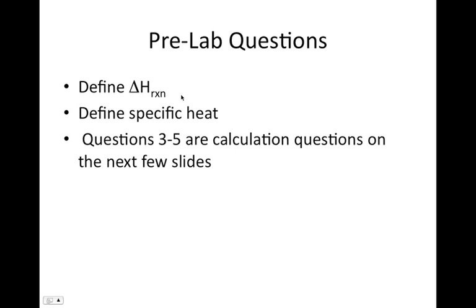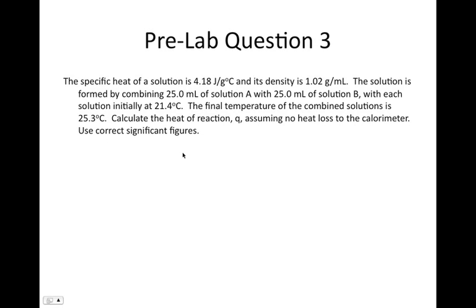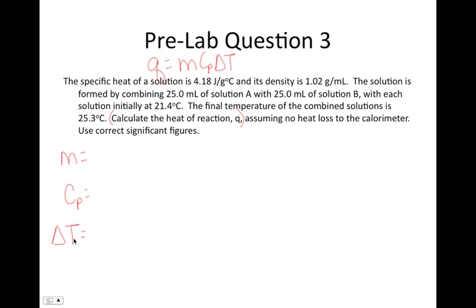Pre-lab question 3: look at what you're ultimately trying to solve for — calculate Q. The formula for Q is MCpΔT, so we need to identify M, Cp, and ΔT. The question gives us the specific heat of the solution and its density. The solution is formed by combining 25 mL of A with 25 mL of B, each initially at 21.4°C. The final temperature of the combined solutions is 25.3°C. Delta T equals Tf minus Ti, so 25.3 minus 21.4 gives us 3.9°C.